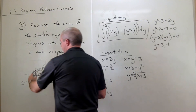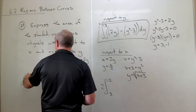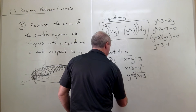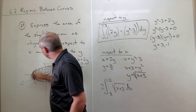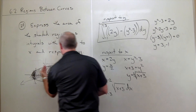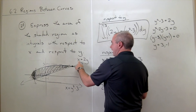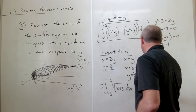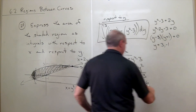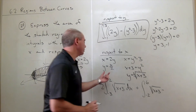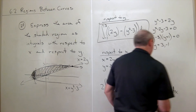From negative three to negative two, the top function is the positive square root minus the negative square root, but since this is a symmetric region I'll double just the top: 2 times the integral from negative three to negative two of the square root of x plus three dx. Then from negative two to six — since plugging y equals three gives x equals six — we integrate the square root of x plus three minus x over two, all dx. These two integrals together give the area of the shaded region.